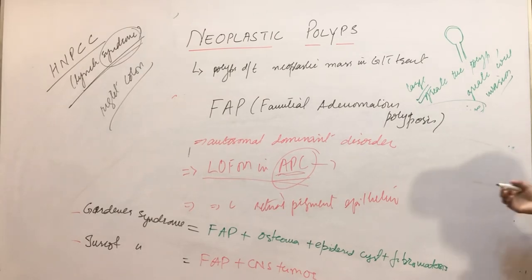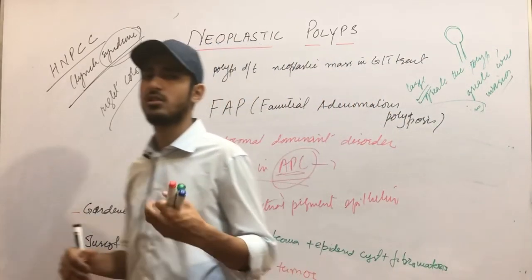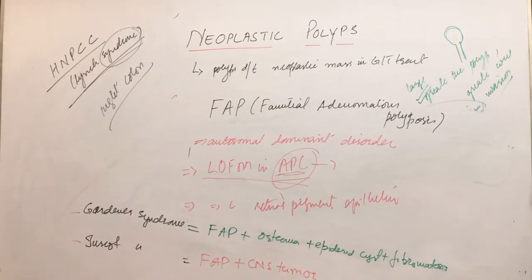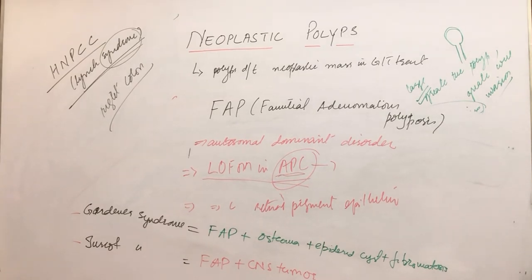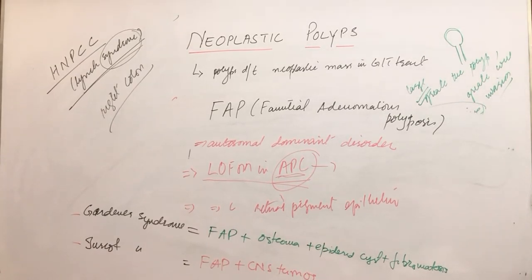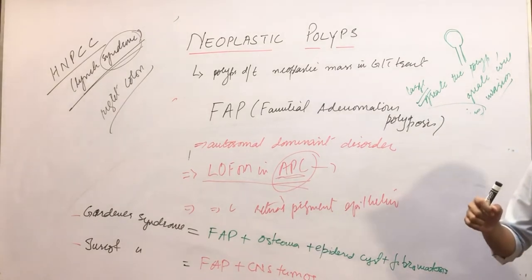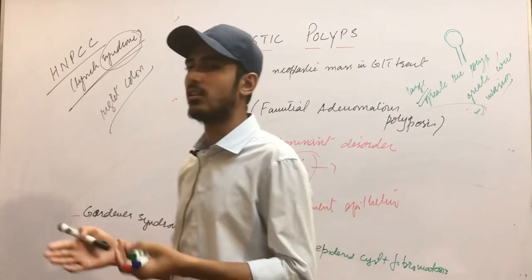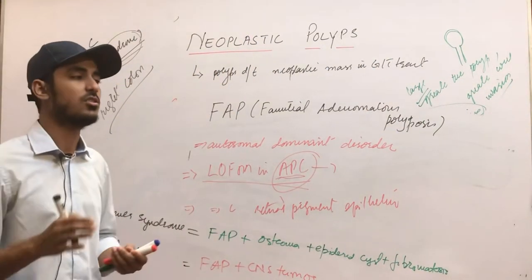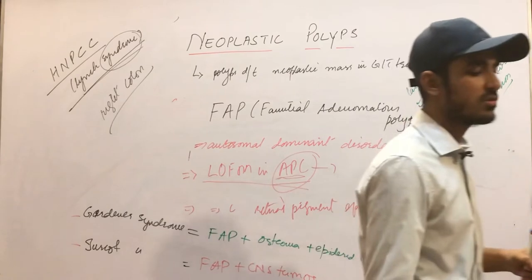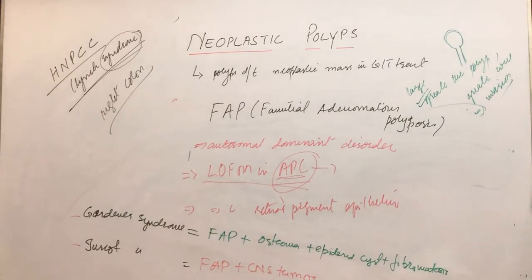The reason HNPCC occurs is mutation in genes that control DNA replication error detection and repair — genes that detect, excise, and repair errors in DNA replication. Those genes are mutated in HNPCC or Lynch syndrome. The polyps in this condition are basically sessile.